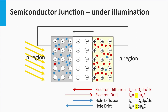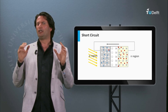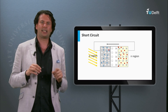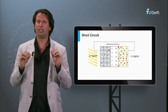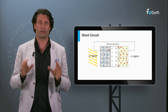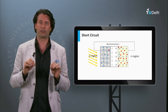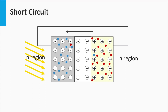By illuminating a p-n junction we can generate a current. Using an electrical circuit we connect the contact at the p-doped silicon with that of the n-doped silicon — in other words, we short-circuit the p-n junction. In this condition the illuminated p-n junction will produce only an electrical current, called the short-circuit current of a solar cell. On average, a minority electron will drift to the n-type material and diffuse to the metal contact where it is injected. The electron then moves to the contact at the p-side and is injected into the p-type silicon, where it quickly recombines with a hole.